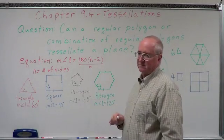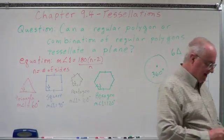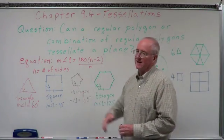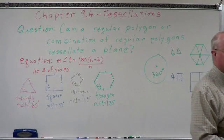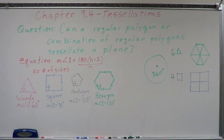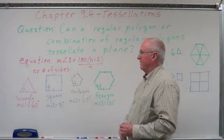How about a pentagon? The interior angle is 108. Does 108 divide into 360 evenly? Try it — it doesn't work. So can we tessellate a plane with just pentagons? It's not going to happen. Why? Because there's either going to be overlapping space or empty space. Pentagons will not tessellate a plane by themselves.